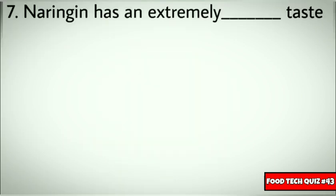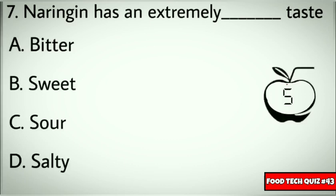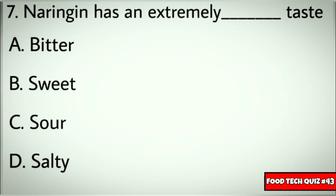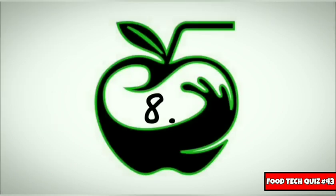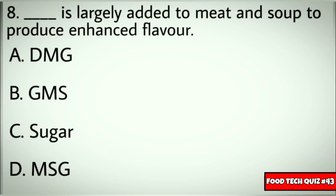Question number 7: Naringin has an extremely dash taste. Options: A) Bitter, B) Sweet, C) Sour, D) Salty. Correct answer: A) Bitter. Question number 8: Dash is largely added to meat and soup to produce enhanced flavor. Options: A) DMG, B) GMS, C) Sugar, D) MSG. Correct answer: D) MSG.